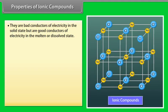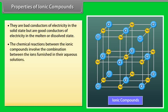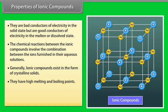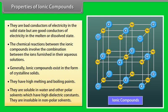Properties of ionic compounds: They are bad conductors of electricity in the solid state but good conductors in molten or dissolved state. Chemical reactions between ionic compounds involve combination between ions in aqueous solutions, called ionic reactions. Ionic compounds generally exist as crystalline solids with high melting and boiling points due to strong electrostatic forces. They are soluble in water and other polar solvents with high dielectric constants, but insoluble in non-polar solvents.